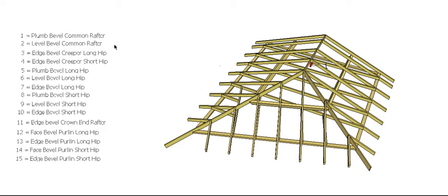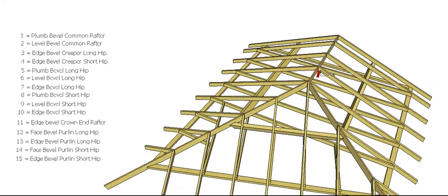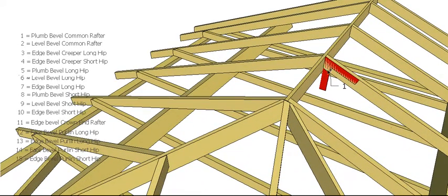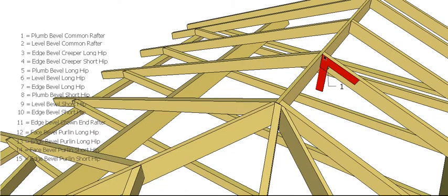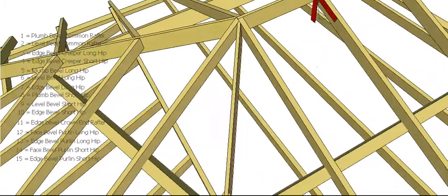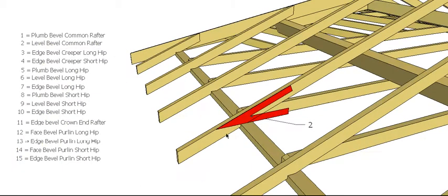Plumb and level bevel for the common rafter. This is our plumb bevel because if we cut that on the end of our rafter, that bevel will end up being plumb in the finished roof. At the other end, if we use our level bevel common rafter, we can use that for the seat cut on our bird's mouth, so that actually becomes level when the rafter is in its finished position.